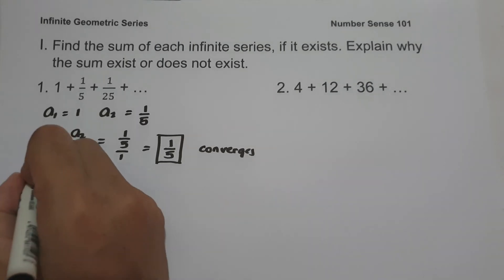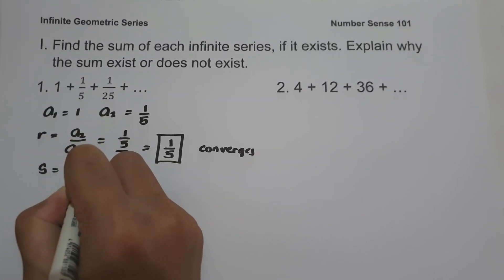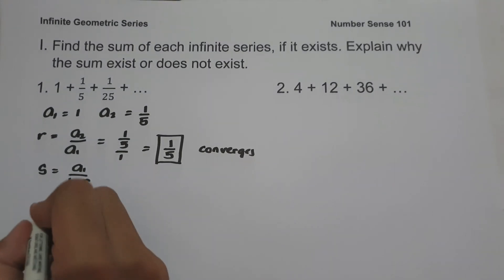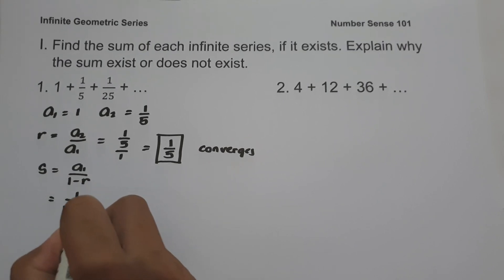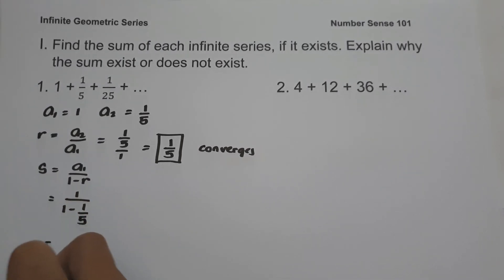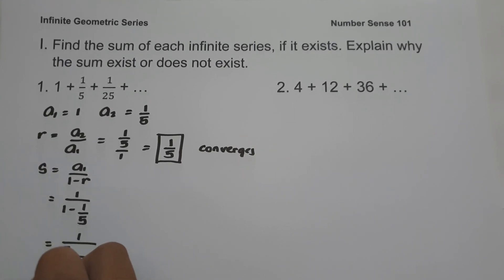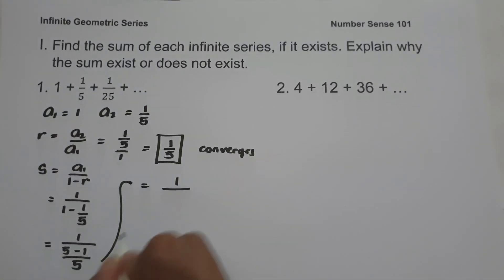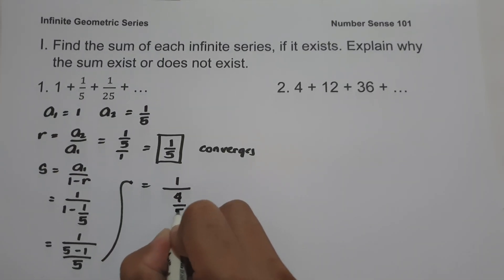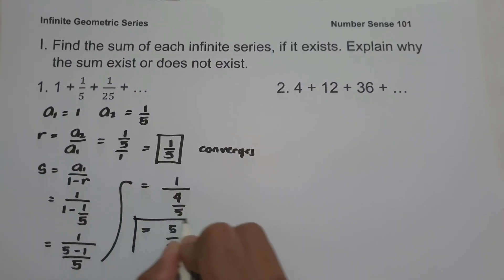To find the sum, we use the formula S equals a sub 1 over 1 minus r. That gives us 1 over 1 minus 1/5. Rewriting with a common denominator of 5, we get 1 over (5 minus 1)/5, which is 1 over 4/5. Therefore, 1 divided by 4/5 equals 5/4. So our answer is 5/4.